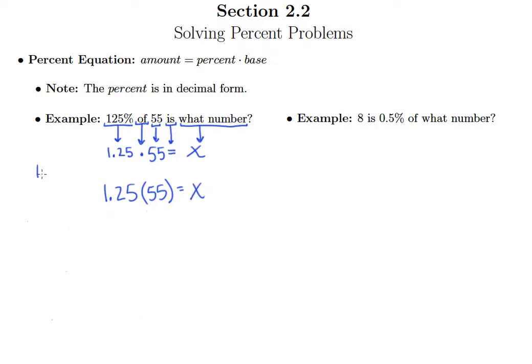So we need to just perform that multiplication here. And 625, bring a zero down, and we'll just get the same digits again. And of course, there's two decimal places in 1.25, so I'll put the decimal point two places over. So we get 68.75 equals X.